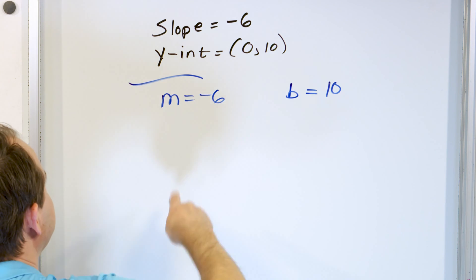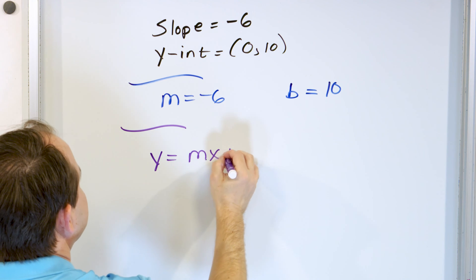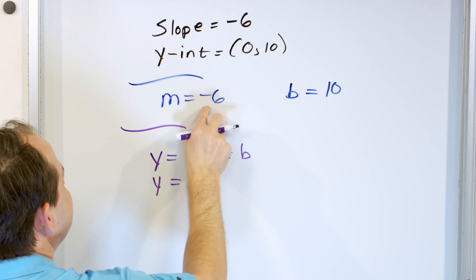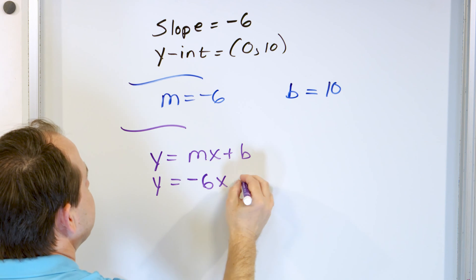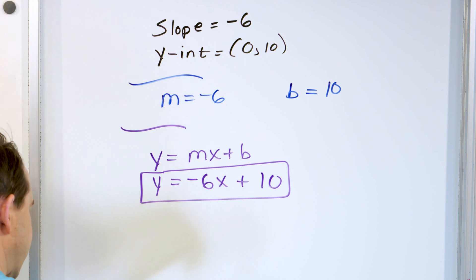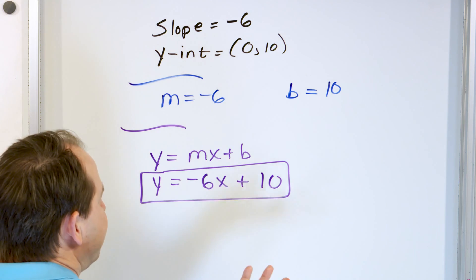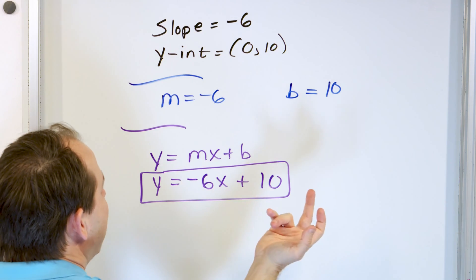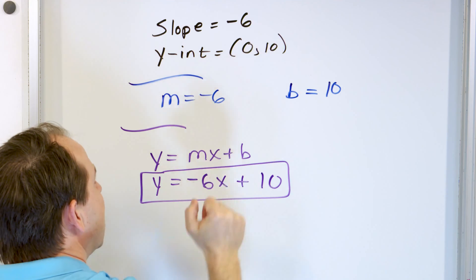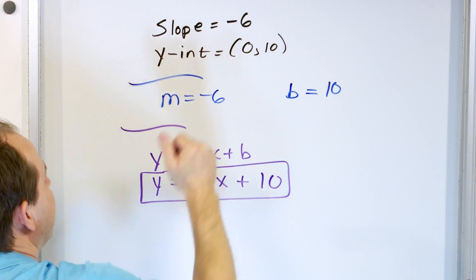Now that you have both of these pieces of information, it's very simple because you know it's m times x plus b. And so m is negative 6 times x plus b is 10. And this is the final answer. This is the equation of the line, negative 6x plus 10. If you were to graph this, then you would obviously find out that it has this slope and this y-intercept. This is the equation of the line that has these characteristics.